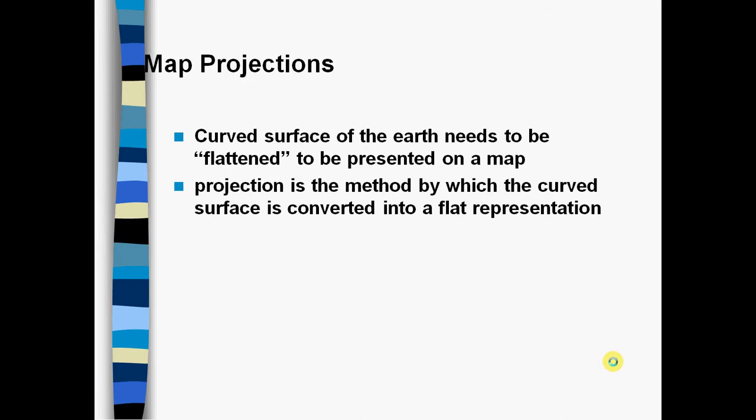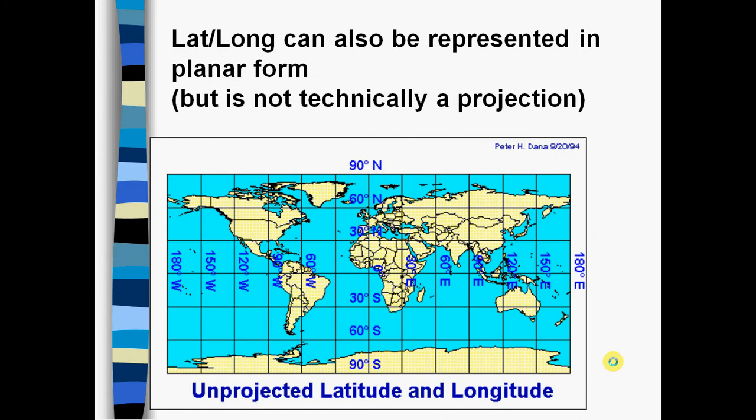The problem with mapping is that computer screens, paper maps, tables, and other things we deal with are flat, and the world is round. If you've ever tried to peel an orange and flatten the peel out perfectly, you'll realize that a round object can't be flattened without distortion. The concept of a map projection is a mathematical transformation by which coordinates on a round surface are converted into coordinates on a flat surface.